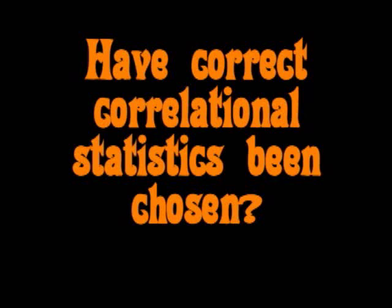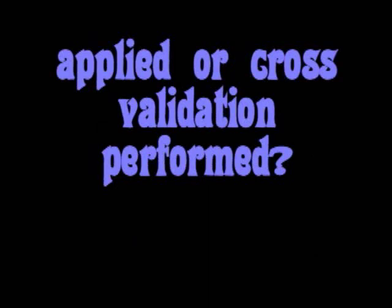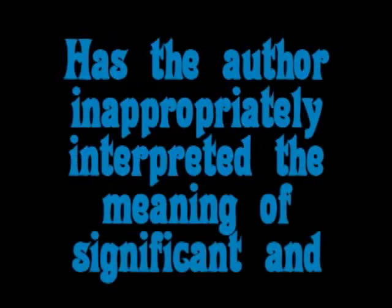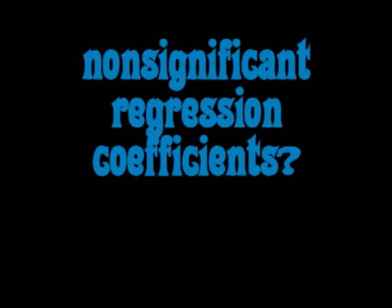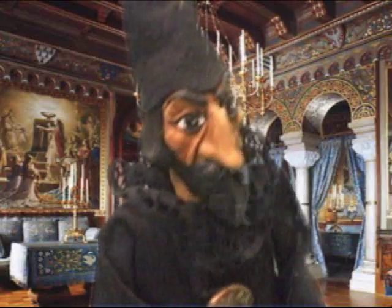Number five: have correct correlational statistics been chosen? Number six: in multiple regression studies, has a shrinkage correction been applied or cross-validation performed? Number seven: has the author inappropriately interpreted the meaning of significant and non-significant regression coefficients? Number eight: has the author committed the correlational causation fallacy in interpreting the results?